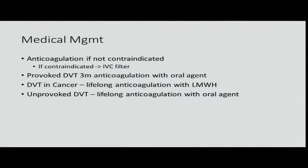Venous thromboembolism — DVT and PE. Medical management is straightforward. Anticoagulate if not contraindicated. As a vascular surgeon consulted for a DVT, the answer is anticoagulate the patient. If they can't be anticoagulated, then you fit into indications for an IVC filter. There's a difference between provoked and unprovoked DVT. Initial management is anticoagulation; the difference is duration. A provoked DVT gets three months after the provoking situation is relieved.